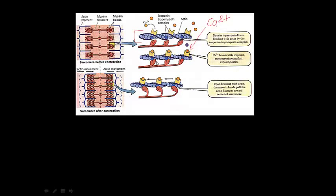So the myosin is grabbing onto the actin. Think of it like a tug of war — think of the myosin crossbridges as your hands and the rope is the actin. When the muscle fiber has been stimulated and calcium is released, you can now grab onto the rope. The myosin crossbridges can grab onto the actin. Now the next step is — notice the difference in the myosin crossbridge here — it has ratcheted. It's pulled on the actin.